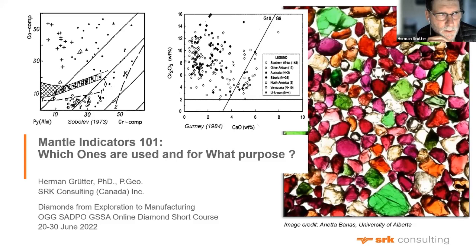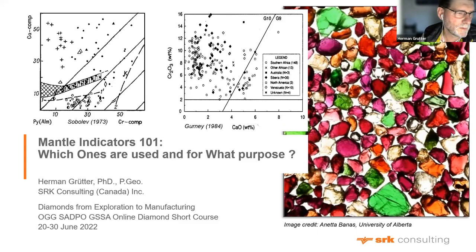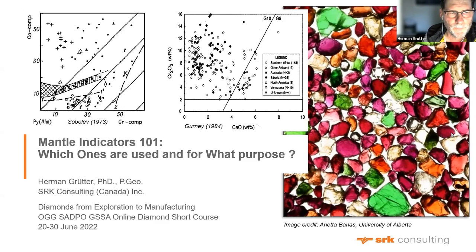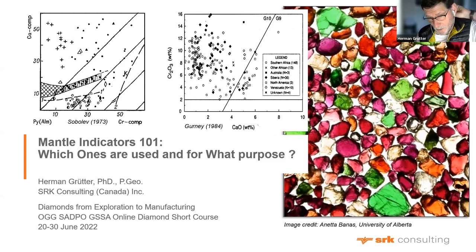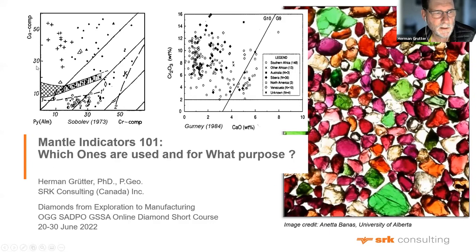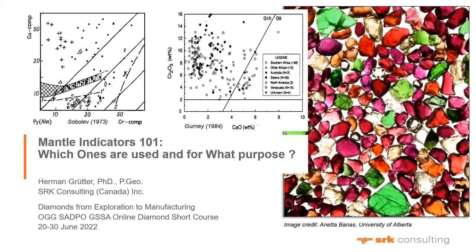The front page shows two images: one from Sobolev published in 1973 — a chrome-calcium plot for garnets with chrome on the x-axis — and one published by Gurney in 1984 with chrome on the y-axis. This has caused interesting discussion about whether the Russian diagram or the Gurney-style diagram is definitive. In southern Africa, they use the Gurney chrome-calcium style, but Russian literature uses a calcium-chrome plot instead.